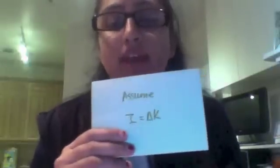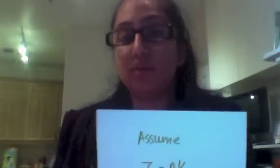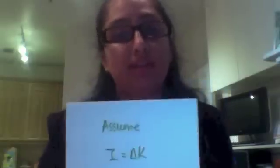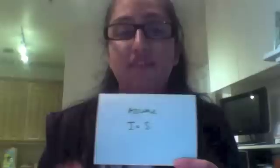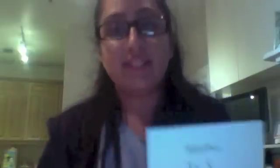Assumption number two: investment is equal to changes in capital stock. This also makes logical sense — if capital stock is changing, there must be a reason, and that reason is people making investments, which show up as changes in capital stock. Assumption number three: investment equals savings, because if you're going to invest you need money from somewhere — savings, which banks transfer into loans or personal savings.